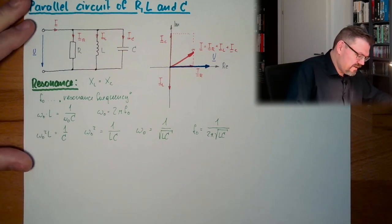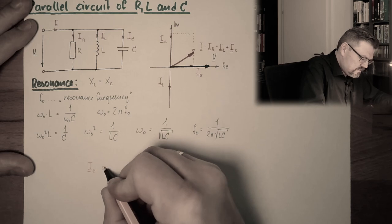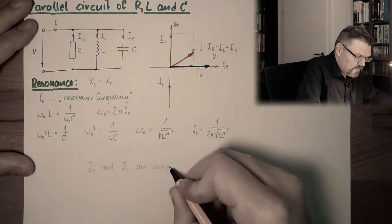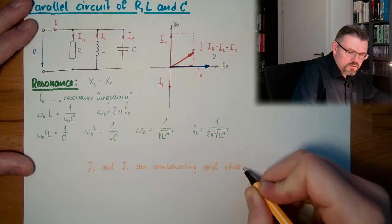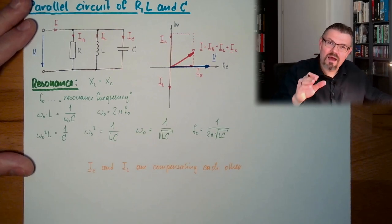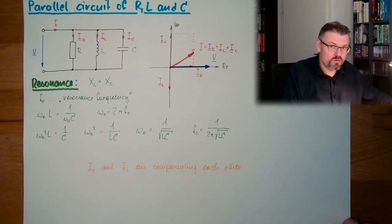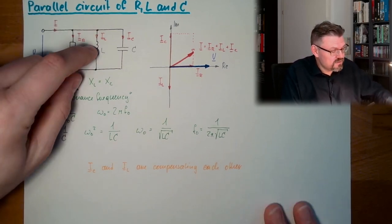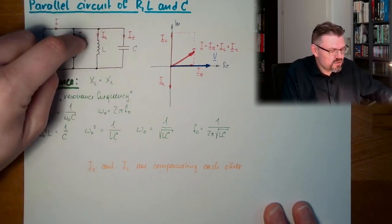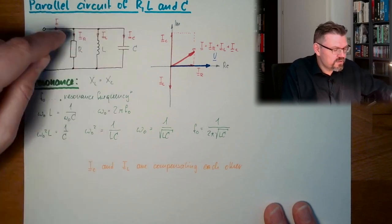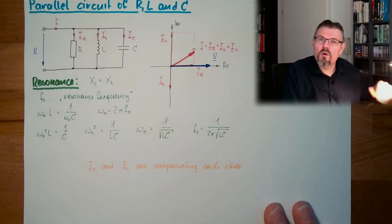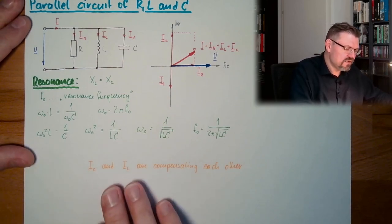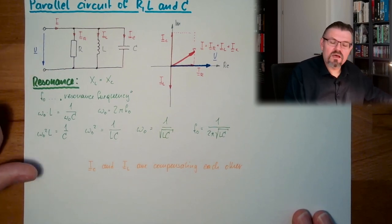Well, IC and IL are compensating each other. They can also be high, depending on the value of U, but they can be quite high. And outside, I don't see them. So these two are constantly exchanging currents. One current is positive, one current is negative, so they're just like bouncing a ball back and forth. This is a swinging. IC and IL are compensating each other. I don't see it on the outside.